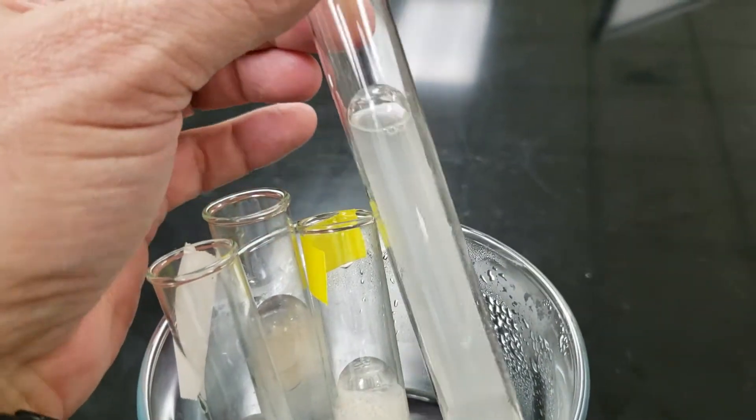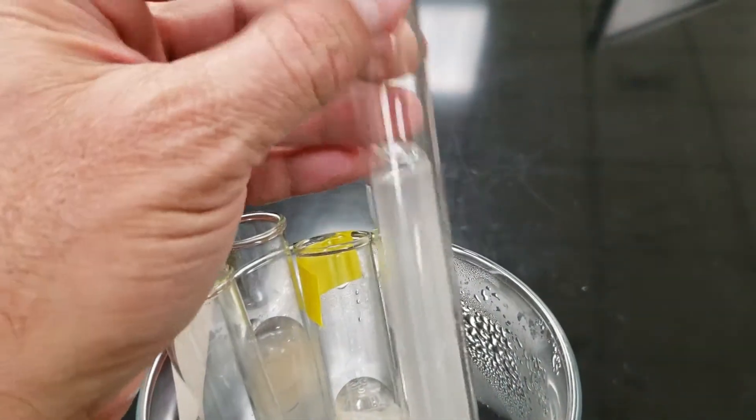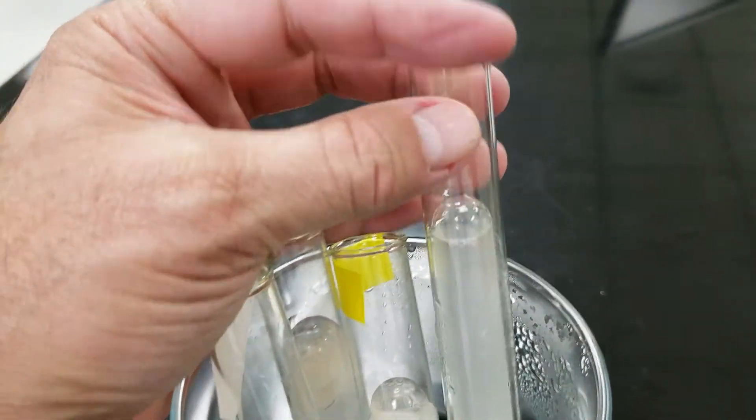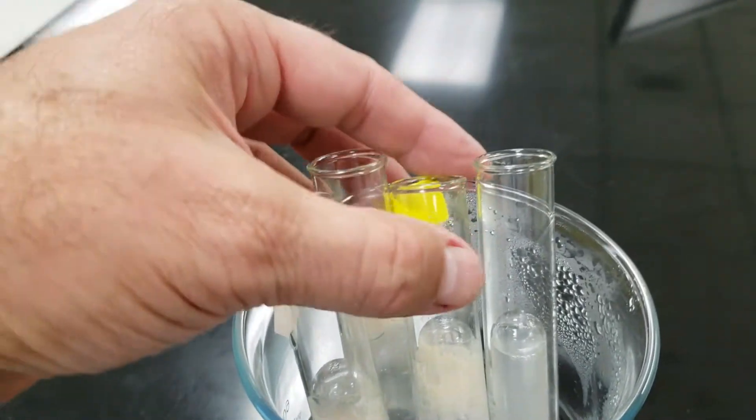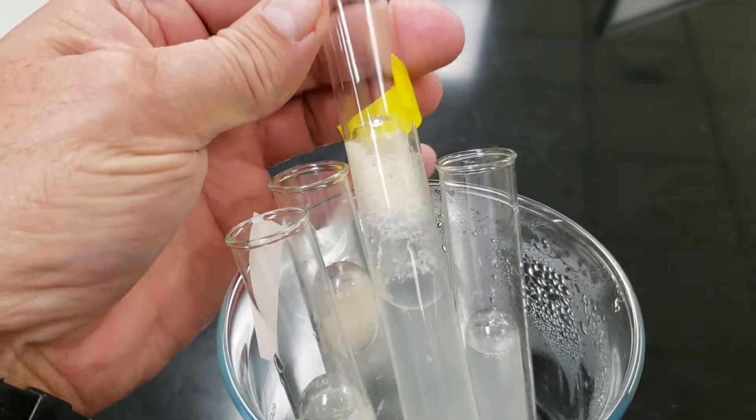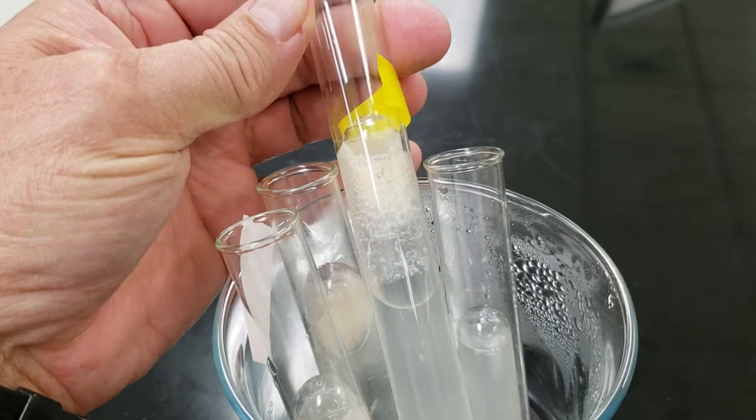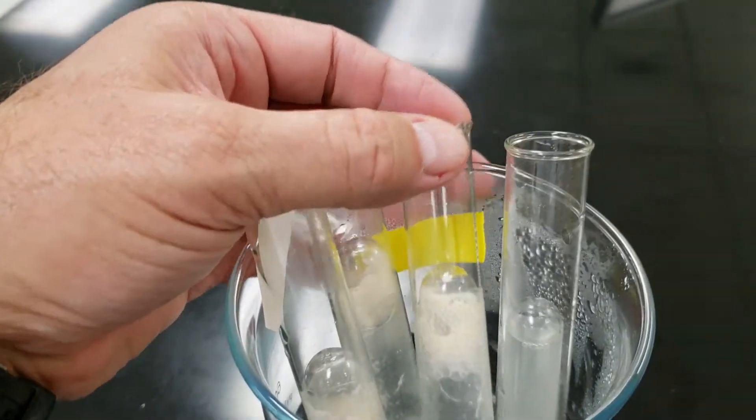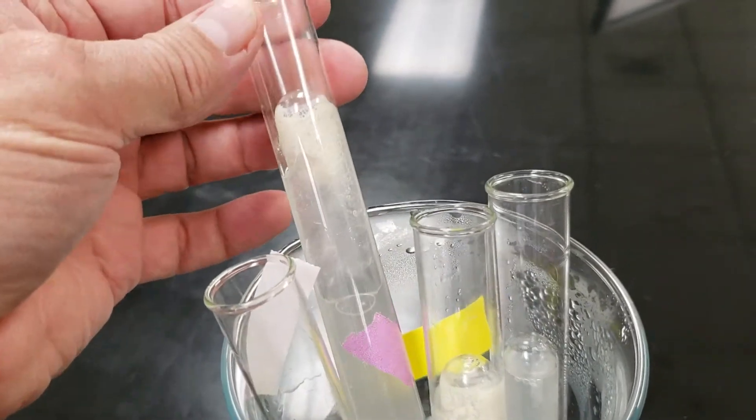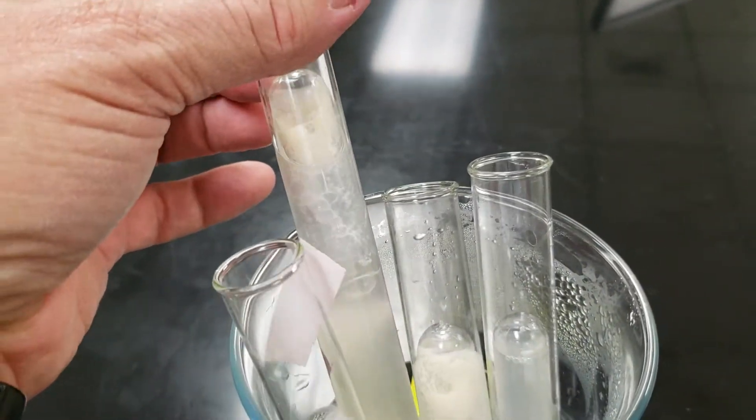Our control with yeast and sucrose shows not very much change. Here is one of our experimental tubes. Looks like we got 40 or 50 millimeters of carbon dioxide with that one. Maybe about the same here.